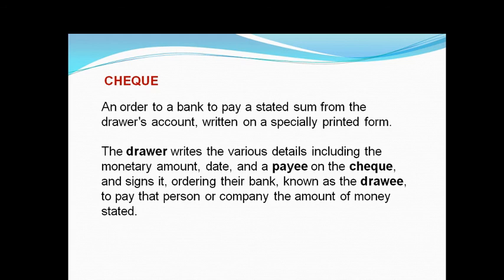The drawer writes various details including the monetary amount, date, and payee on the cheque and signs it, ordering their bank — known as the drawee — to pay that person or company the amount of money stated in the cheque.